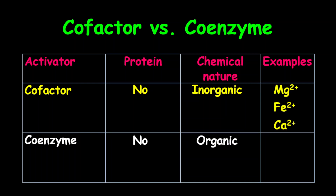Examples of cofactors include the magnesium ion, iron 2+, iron 3+, and calcium ion. For coenzymes, we have NAD+, which is the charged form — the uncharged form will be NADH. We also have NADP+, and the uncharged form will be NADPH. We also have FAD as well.